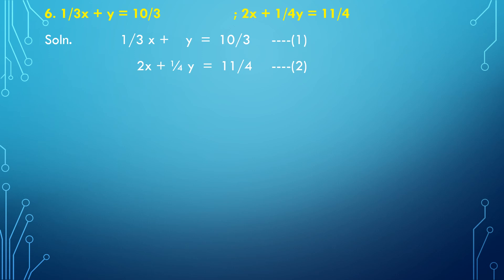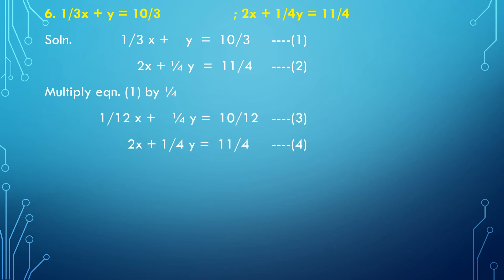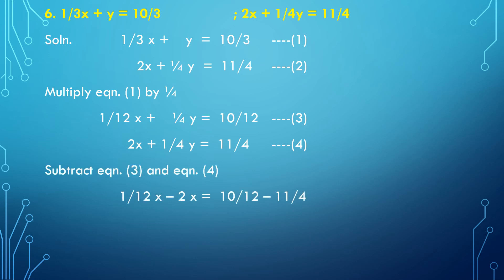First, we will make the coefficient of y equal. For this, we multiply equation number 1 by 1/4. Equation number 1 becomes (1/12)x plus (1/4)y equal to 10/12 — this is equation number 3. Equation number 2 stays the same: 2x plus (1/4)y equal to 11/4 — equation number 4. Now subtract both equations: (1/12)x minus 2x, and (1/4)y minus (1/4)y gets cancelled, equal to 10/12 minus 11/4.